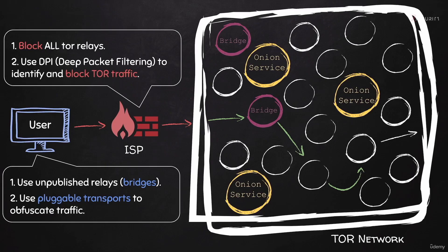In the previous section, we learned how your Internet service provider or your network admin could block you from accessing Tor. We also learned that we can use Tor bridges or pluggable transports to bypass this and access the Tor network. You might also want to use Tor bridges or pluggable transports even if you're not being blocked from using Tor, if you just want to hide the fact that you are using Tor.